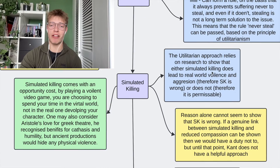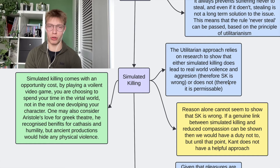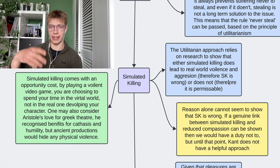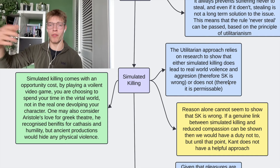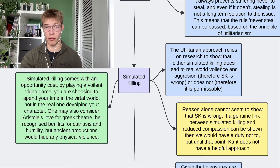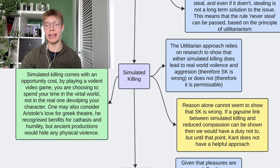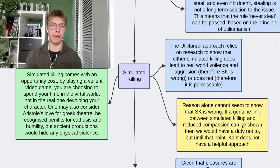Simulated killing: utilitarianism and Kant are both limited here, because the issue relies on empirical evidence that we do not have. There's no conclusive evidence either way as to whether simulated killing leads to real-world violence and real-world pain and suffering. For utilitarianism, we need to wait: either simulated killing does lead to real-world aggression — and therefore it's wrong — or it does not, and therefore it's permissible. For Kant, there's no contradiction or inconsistency with simulated killing, but if a genuine link is shown to reduce compassion then we have a duty not to engage in it. As noted, we don't have that evidence yet.